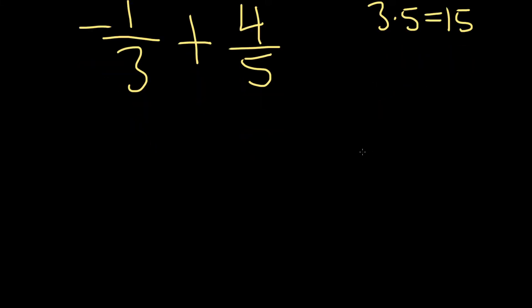So now what we do is we rewrite the problem, so negative 1 third, times, and then you multiply by 5 over 5. And the reason you do that is because we're allowed to do that. We're multiplying by 1, because the 5 over 5 cancels. So we're really not doing anything.